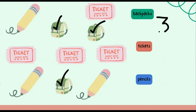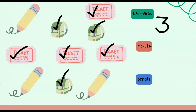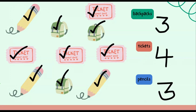We have a total of three backpacks. Now we're going to count the tickets. Starting at the top: one, two, three, four. There are a total of four tickets. Now we're going to count the pencils. Count with me: one, two, three. Excellent job! We have three pencils. In this object set, we have three backpacks, four tickets, and three pencils.